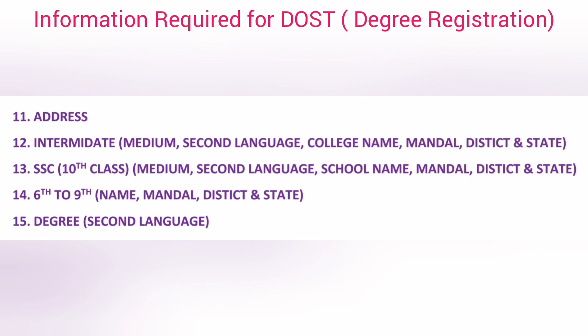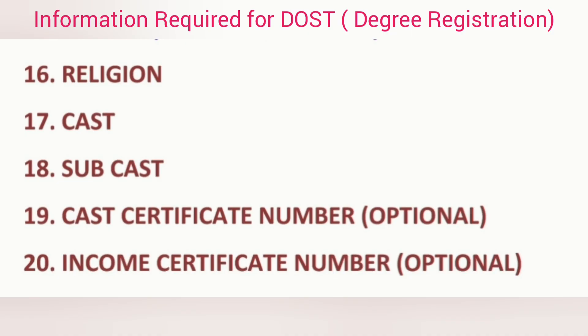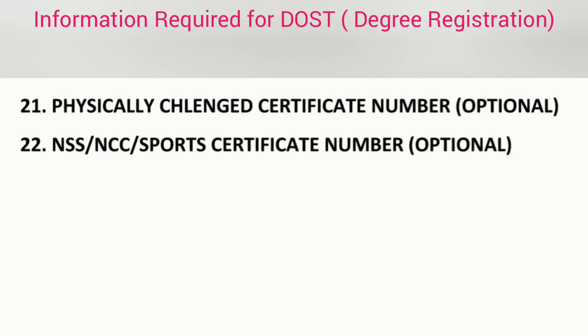Next, in degree, which language you want as a second language. There are a number of options like Telugu, Urdu, Hindi, Arabic, Sanskrit — anyone you can select. Next, religion: you just mention your religion. If you are OC, no need of any caste certificate. Others like BC, ST, SC — they have to submit their caste certificate number. Next, income certificate and physical challenge certificate. NSS, NCC, sports certificates — these are optional. If you have them, just mention that certificate number while your registration. So these many things are needed for registration.